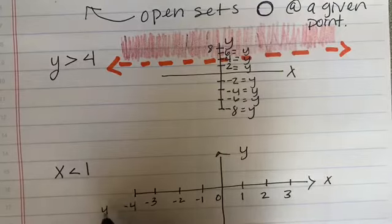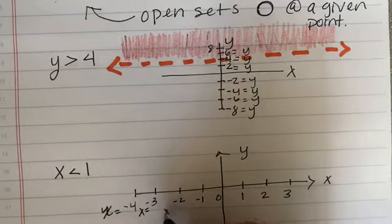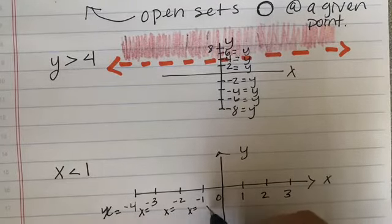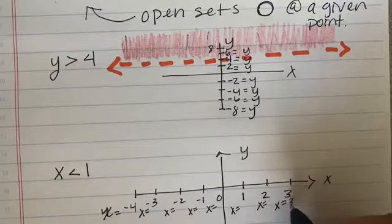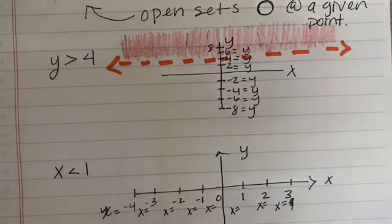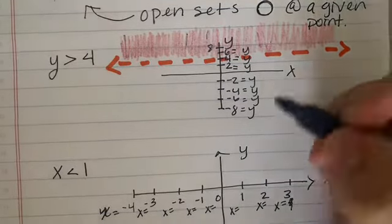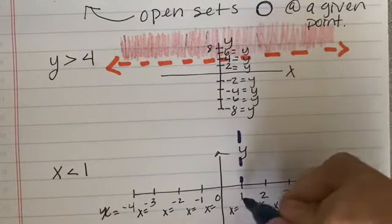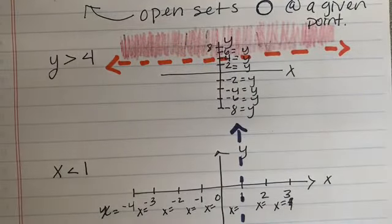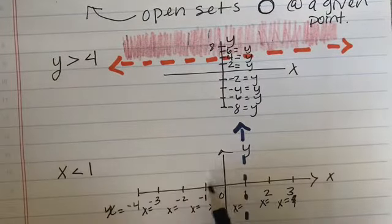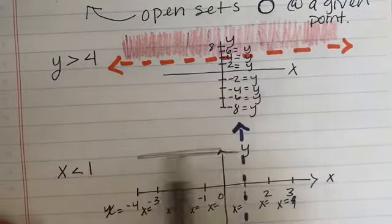So X equals negative 4, X equals negative 3, X equals negative 2, X equals negative 1, X equals 0, X equals 1, X equals 2, X equals 3. I have X is less than 1, so I'm going to find the vertical line where X equals 1. I know it's dashed. I put my arrows and I'm going to shade to the left, because all numbers to the left are less than 1.